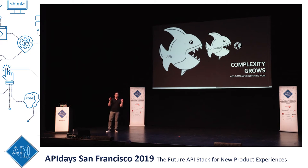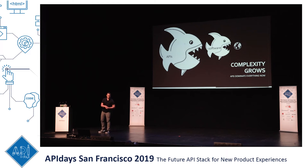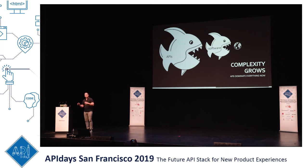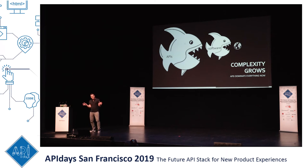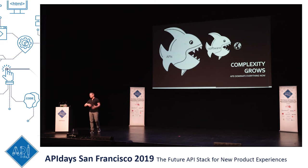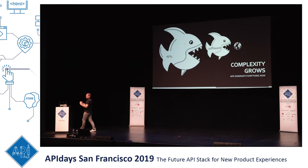Back in 2011 Marc Andreessen famously said that software was eating the world. And then a little bit later Forbes said every company is now a software company. And then about 2015 we said APIs are eating all that software. It's an incredibly complex layering.